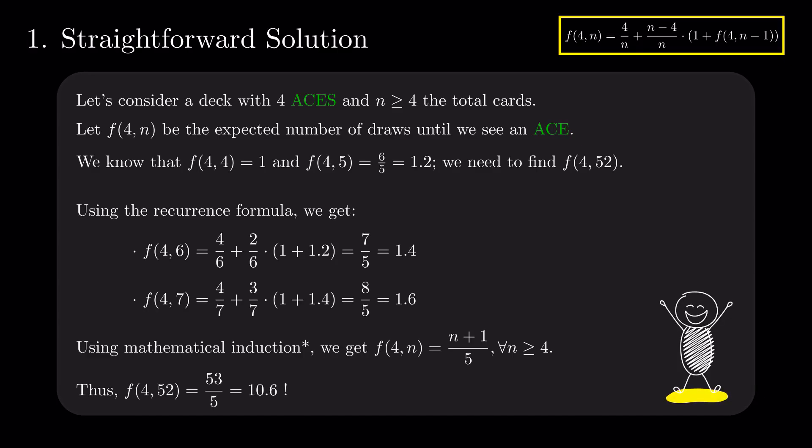We observe that moving from n to n plus 1 cards in the deck, we only increment the value of the function by 0.2. You might ask yourself, where is this number coming from? The next solution provides a beautiful intuition behind the result we proved before.